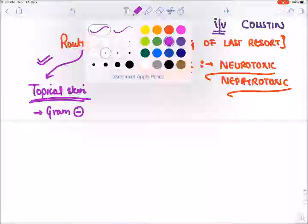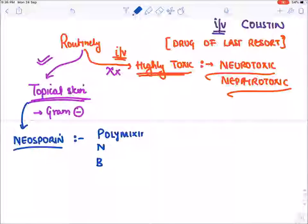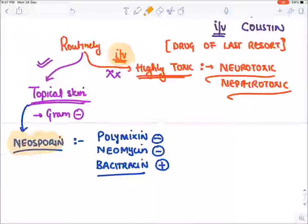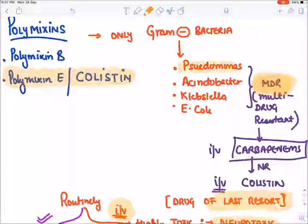Topically, polymyxin comes in the famous cream neosporin. Neosporin cream contains three chemicals: polymyxin, one aminoglycoside neomycin — these two cover gram negative bacteria — and bacitracin, which covers gram positive bacteria. IV, they are given only as a last resort for MDR species of pseudomonas, Acinetobacter, Klebsiella, and E. coli because they are highly neurotoxic and nephrotoxic.